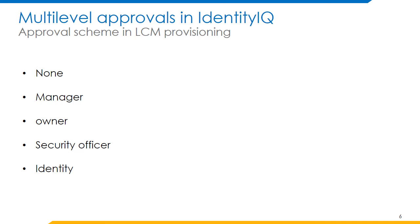Let's discuss the variable approval scheme in LCM provisioning. Approval Scheme is a CSV string that specifies how approval items should be generated for the incoming request. The value can be 'none', in which case approvals are disabled. It can also be a combination of any values, separated by commas, and they are processed in the order in which they are specified. For example, if the approval scheme is specified as 'manager,owner', the first approval will be sent to the manager and then the second to the owner, and vice versa.